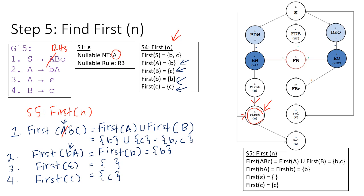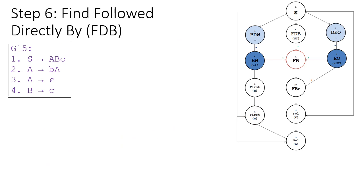This is how you derive FIRST(N), or the first of the right side of each rule. Now, what is the next step after step five? There is an arrow coming out of step five that goes directly to step 12. We only take this path if there is no nullable rule in our grammar. However, since we have a nullable rule — rule three — we need to go and derive steps six through eleven first, before going to step 12.